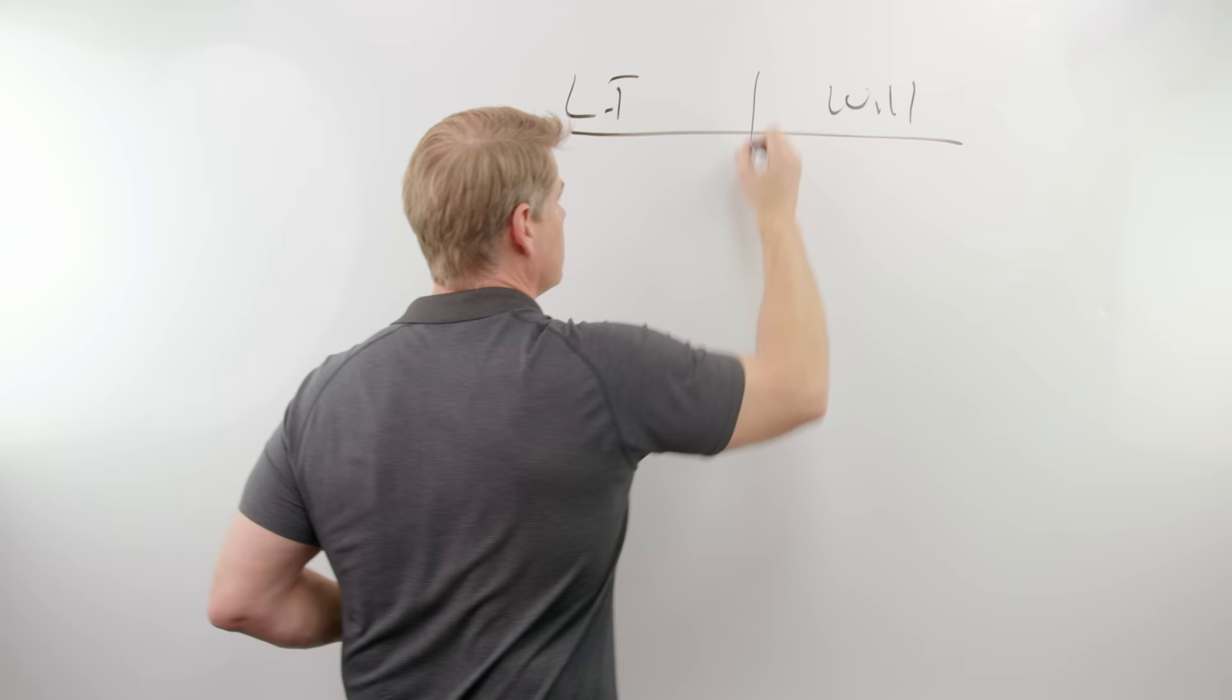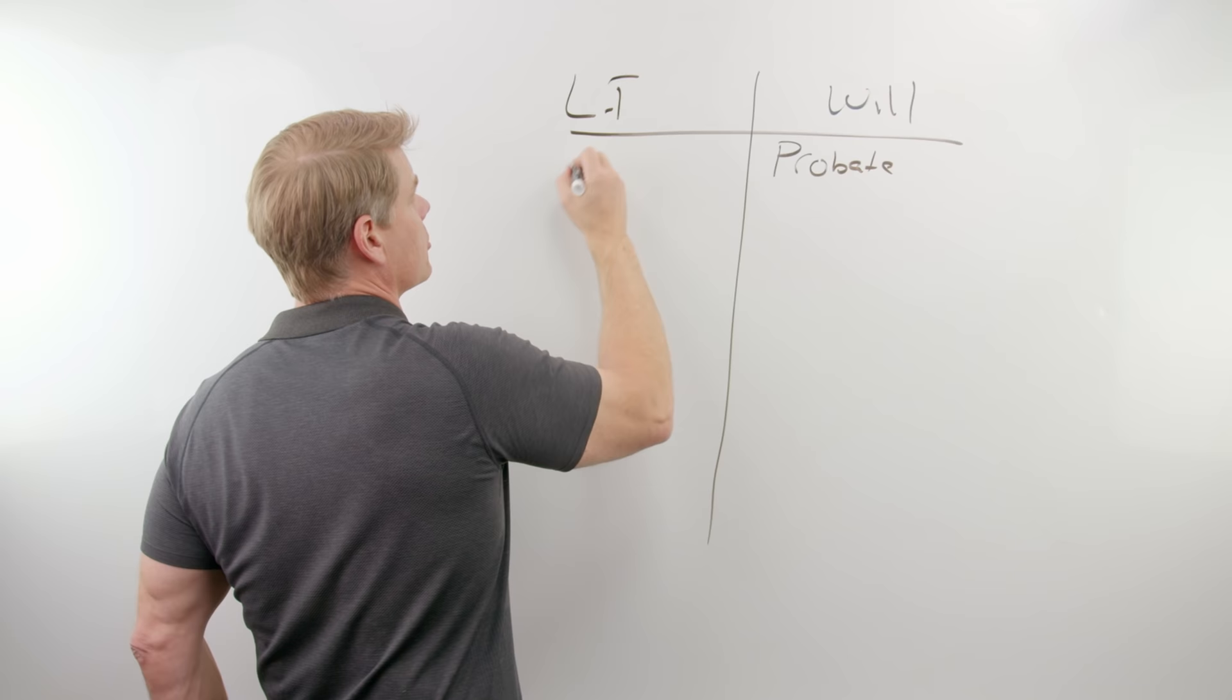Well, when it comes to wills, the things that make it so attractive for attorneys to set up a will versus a living trust, and I'll explain these as I go along, all right, is that in a will, you have to go through probate, all right? With a living trust, there's no probate. What is probate?